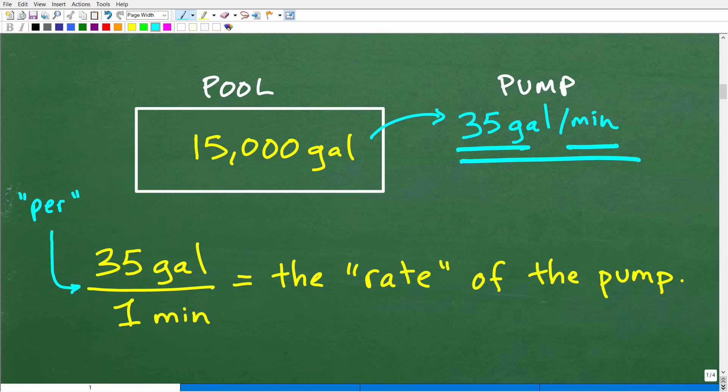So here is our lovely pool. It has 15,000 gallons of water and we want to empty it out with this pump. And this pump can move 35 gallons per minute. Okay. This is the rating of the pump. So is this going to be enough pumping capacity to empty this pool in six hours? Well, of course, we need to figure this question out. But the first thing we need to notice is that we're dealing with a rate. Okay. This is a huge topic in mathematics.